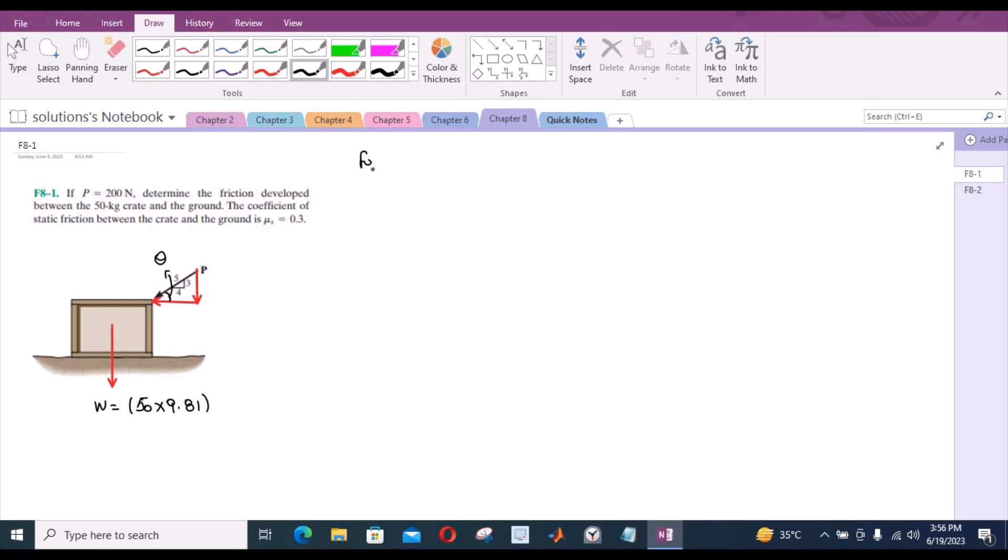Let us consider this angle right here as theta. For theta, by considering this 3-4-5 triangle and using the relation of tan, we have tan theta equals the opposite (3) over the adjacent (4). So theta becomes 36.87 degrees.